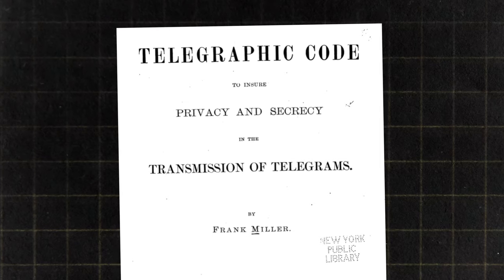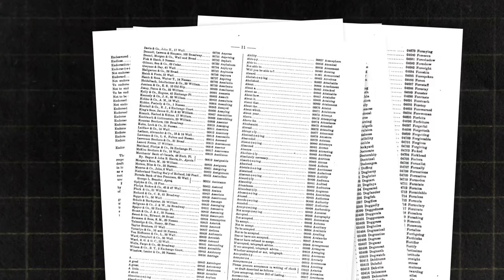The concept behind the one-time pad dates back to 1882. It was originally designed by a guy called Frank Miller, he was a banker and he made this code book that would help secure banking transactions, way out of its time. But in 1917, a guy called Vernon took it to the next level, and that is what we're going to look at right now.